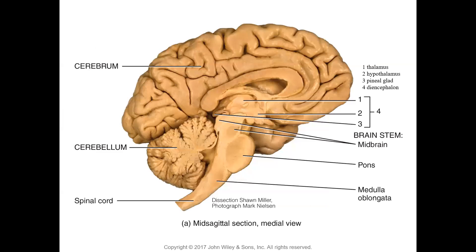This mid-sagittal section of the dissected human brain shows the spinal cord, medulla oblongata, pons, and midbrain as parts of the brain stem, then the diencephalon. The diencephalon consists of the thalamus, hypothalamus, epithalamus, and the pineal body — the pineal gland is part of the epithalamus. This is the cerebrum; the cerebellum shows its tree-like inner white matter and outer gray matter structure.